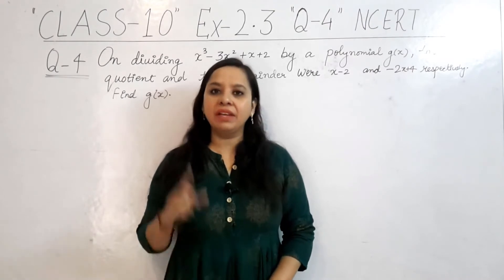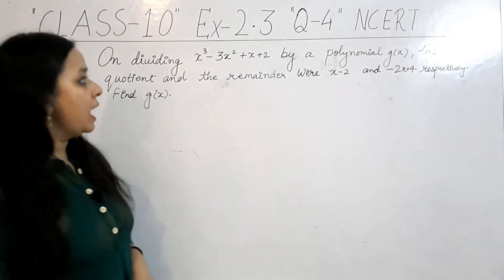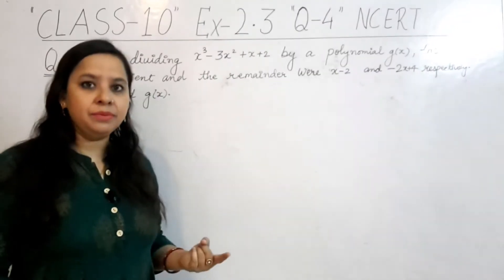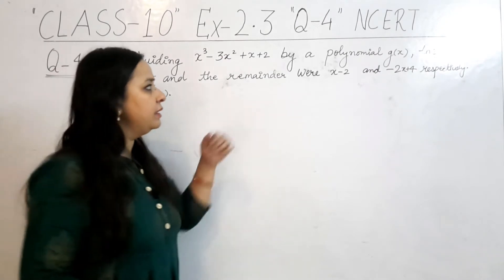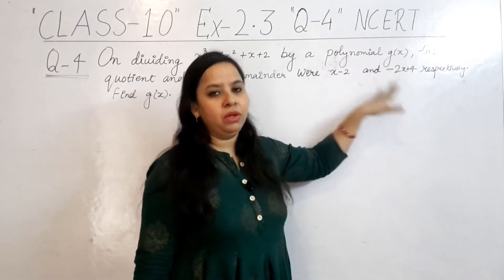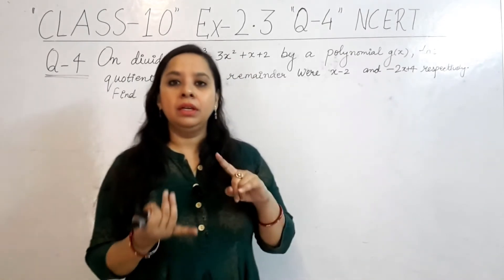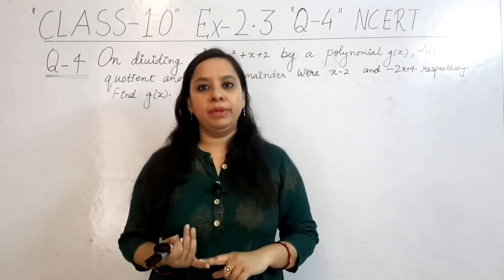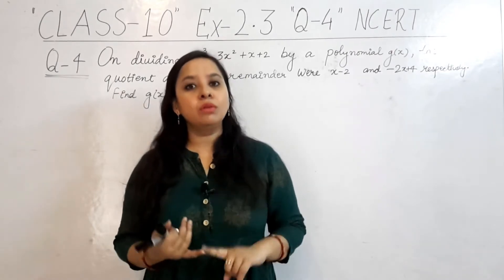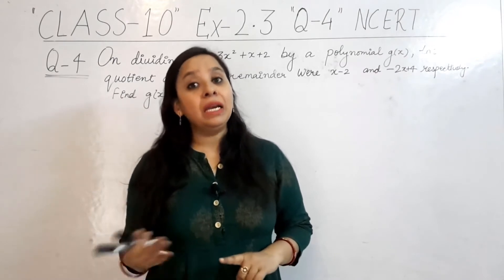In this question, we have a given polynomial: x cubed minus 3x squared plus x plus 2, and we have to divide this polynomial by another polynomial g(x). After division, we get the quotient is x minus 2 and the remainder is minus 2x plus 4. So, we have the dividend, the quotient, and the remainder — but we have to find the divisor.